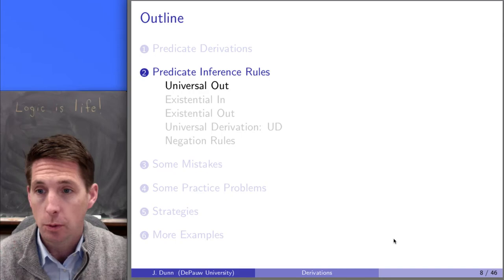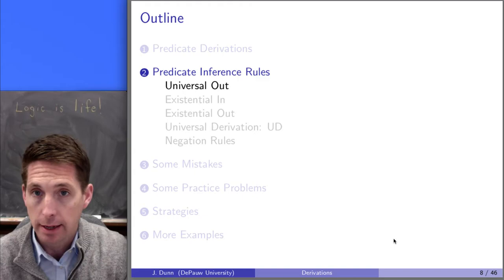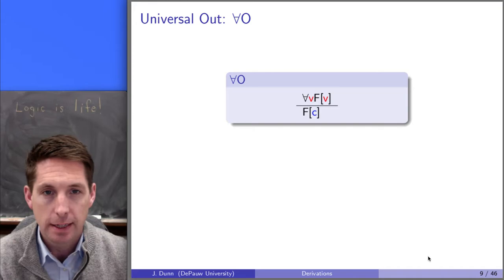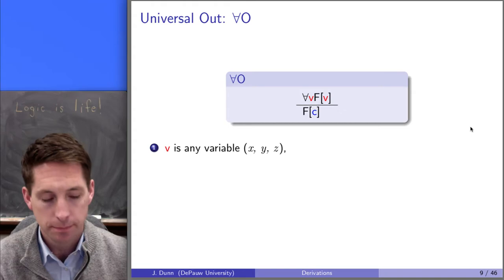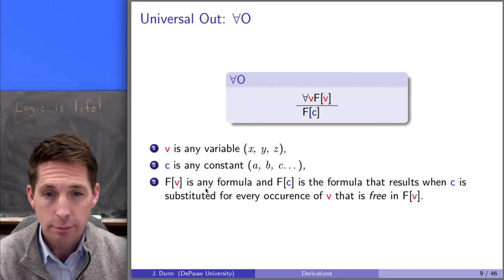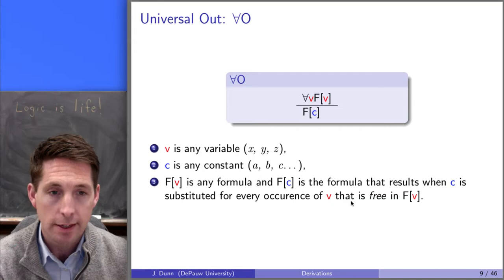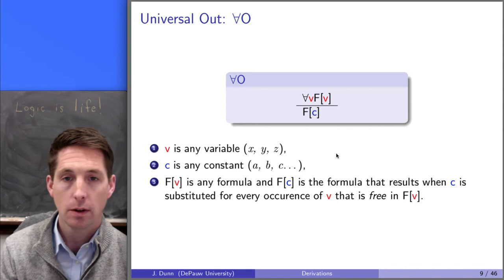Let's talk about how this rule works. This is a rule that allows us, as you might imagine from the name, to figure out how to get rid of a universal quantifier. Here's what the rule says — this statement is probably not the most intuitive, but examples will hopefully help. It says: if you have something in the form universal v, F(v), where v is any variable (x, y, or z), where c is any constant (a, b, or c), and where F[v] is any formula, then F[c] is the same formula that results when constant c is substituted for every free occurrence of variable v in F[v]. That's probably not super intuitive, but this is how the rule is stated and what's listed on your rule sheet.